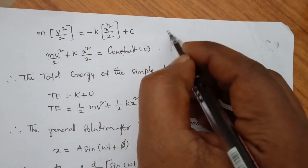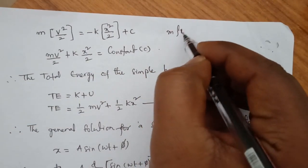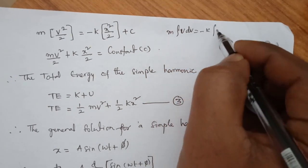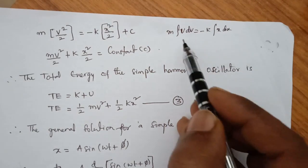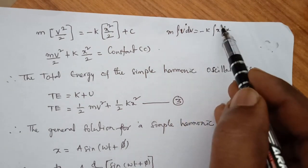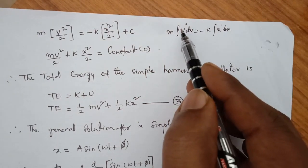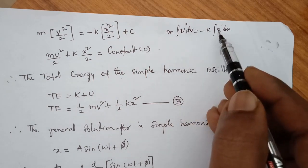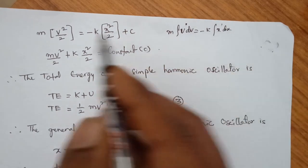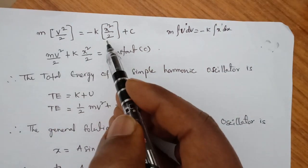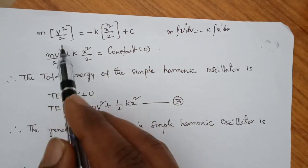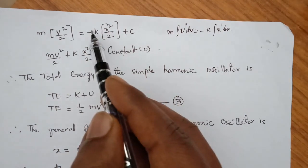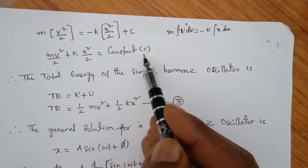m times the integration of v dv equals minus k times the integration of x dx. With v power 1 and x power 1, applying the formula gives v squared by 2 and x squared by 2. So m into v squared by 2 plus k into x squared by 2 equals a constant E after integration.